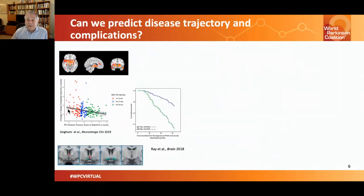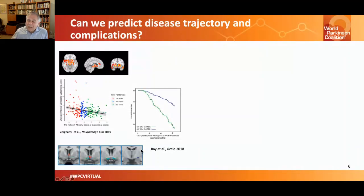Another group in the UK has looked specifically at the basal forebrain, which sends cholinergic projections. They have found that the measure of basal forebrain volume will predict future cognitive decline in people with Parkinson's disease.